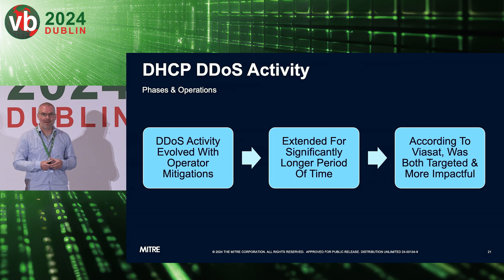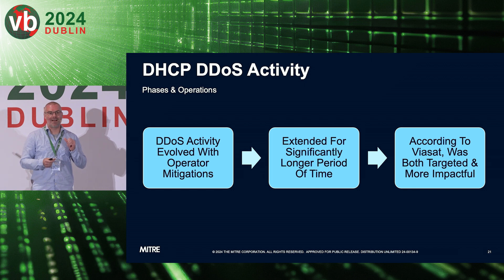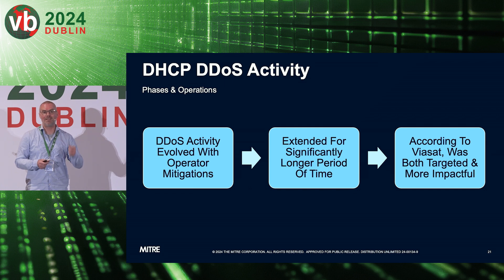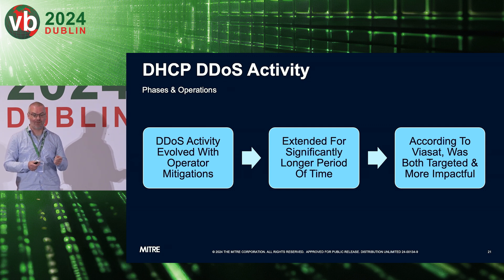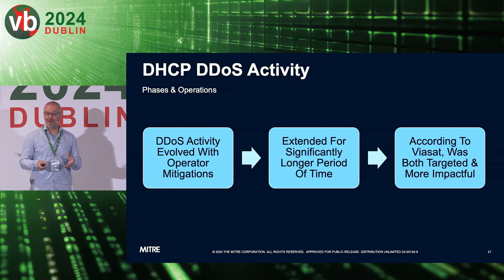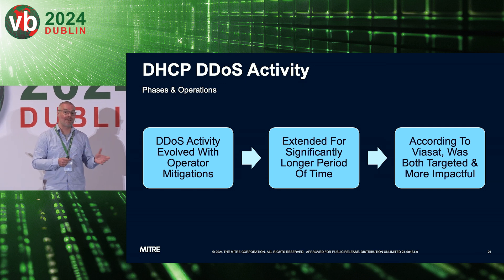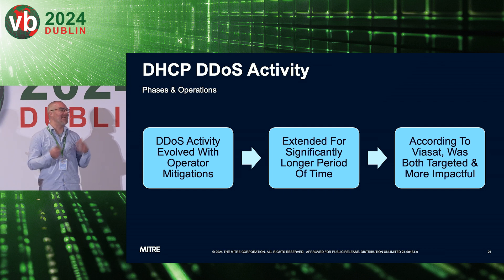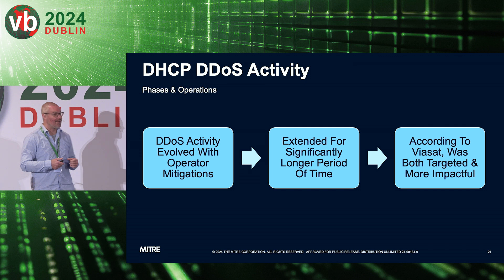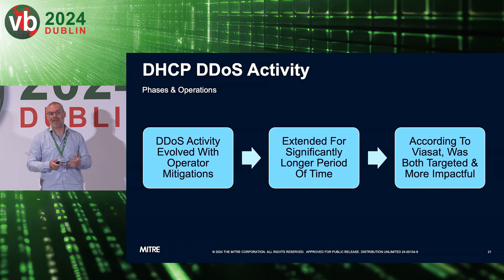This activity evolved with defender mitigations. Talking to personnel from Viasat, they found it very interesting in an academic sense — very frustrating in an operational sense — that the attackers kept this up beyond the initial time window in order to continue degrading the effectiveness and operating capability of the KA-SAT network for Ukrainian military command and control operations. This extended for a longer period of time and, at least according to Viasat, was both targeted and more impactful than the initial AcidRain deployment.